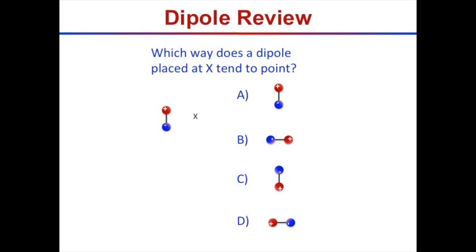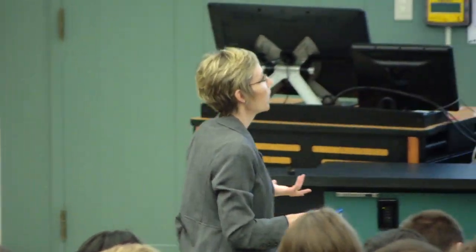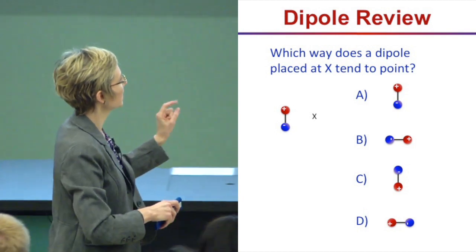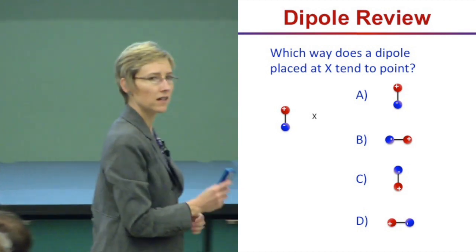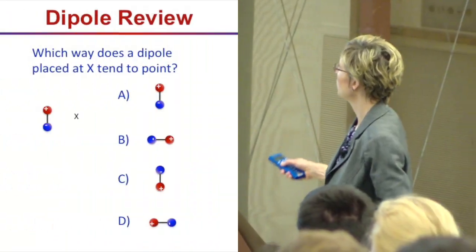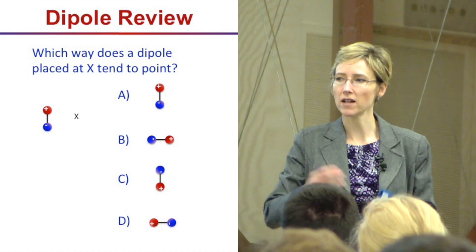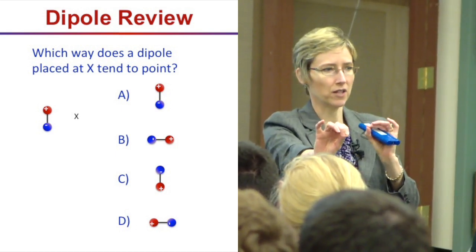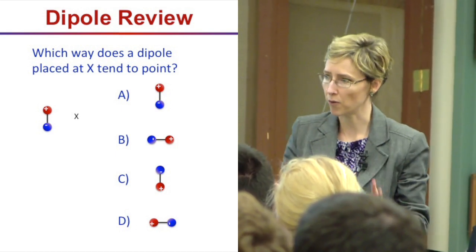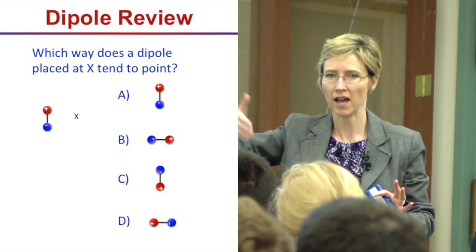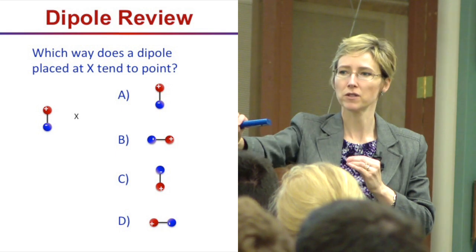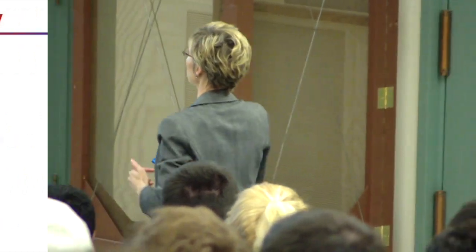The electric field at X points downward from the fixed dipole. Which dipole orientation would be happiest in a downward-pointing electric field? Positive charges tend to run along the field, negatives run against — that goes back to F = QE. So a positive charge follows the field, a negative charge runs against it. Answer C is the preferred orientation.